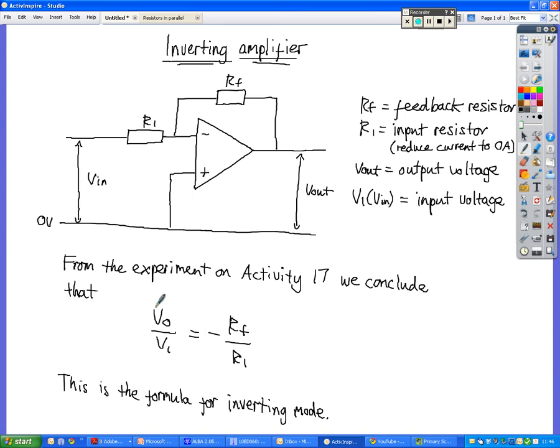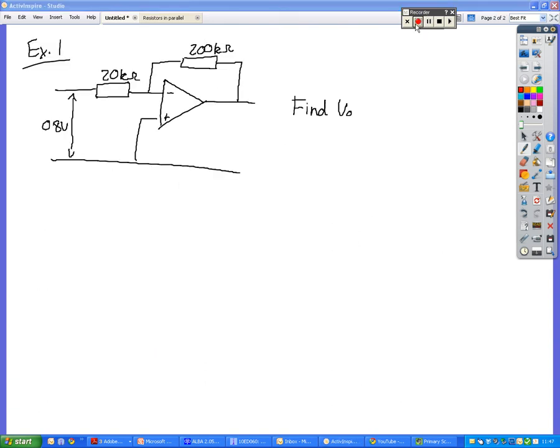So that's our formula there for the gain of an operational amplifier. I'll show you an example on that just now. So a simple example of an inverting operational amplifier. So just write down what we have first of all.